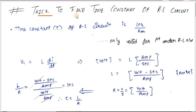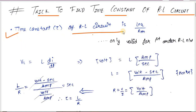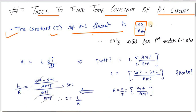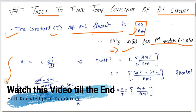Hello friends, today we are going to see the trick to find the time constant of an RL circuit. The basic formula for the time constant of an RL circuit is L by R. From now onwards we are going to say this as L equivalent by Rth. This formula is only valid for a first-order RL network. If you have an RL network of higher order, you have to use Laplace transform to get the time constant.